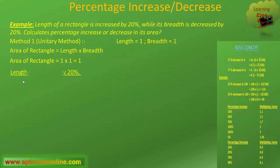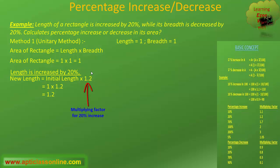As per the question, the length has been increased by 20%. That means we will have to multiply the initial value by 1.2, as 1.2 is the multiplying factor for 20% increase, to get the final value of length. So, after increasing 20% in length, it has now become 1.2.